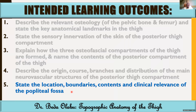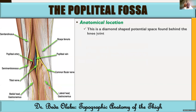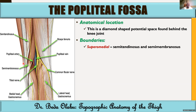Now we can finish with the popliteal fossa — looking at its boundaries, contents, and clinical relevance. It is a diamond-shaped space found behind the knee joint. Being diamond-shaped, we can describe four walls: superomedial, superolateral, inferolateral, and inferomedial. The superomedial wall is formed by two muscles: semitendinosus and semimembranosus.